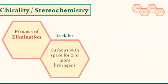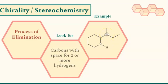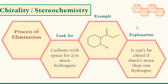Still using the process of elimination, I'm now going to look for carbons with space for two or more hydrogens. This carbon right here has space for two hydrogens. Same here, here, and here — all of those carbons have spots open for two hydrogens. This one doesn't — it has three other groups shown, leaving space for just one hydrogen. It can't be chiral if there's more than one hydrogen. I'm saying 'space' because the hydrogens aren't usually drawn in.